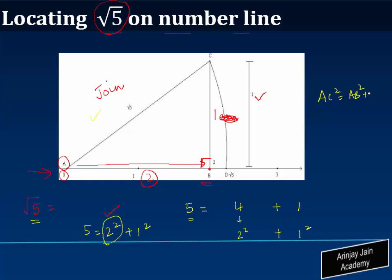Or in other words, AB is 2 units, so 2 squared plus BC is 1. 2 squared is 4 plus 1 equals 5, or in other words, AC is equal to square root of 5.